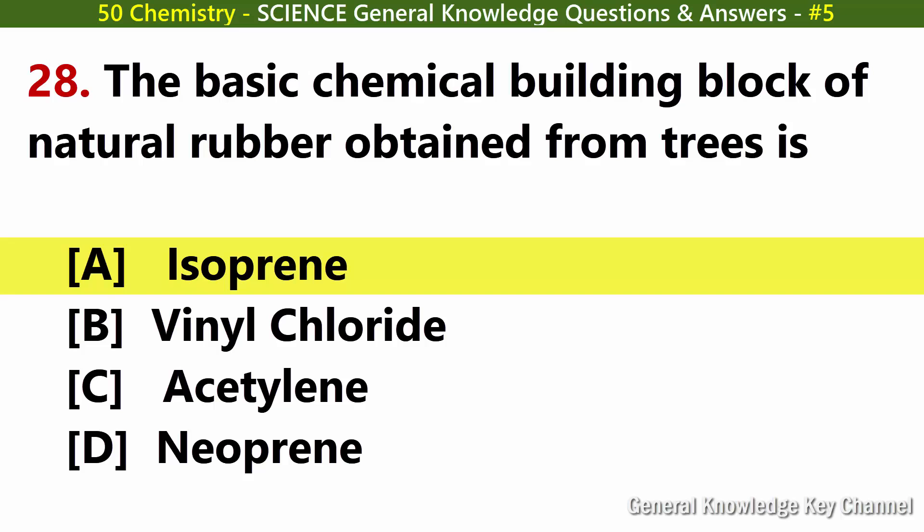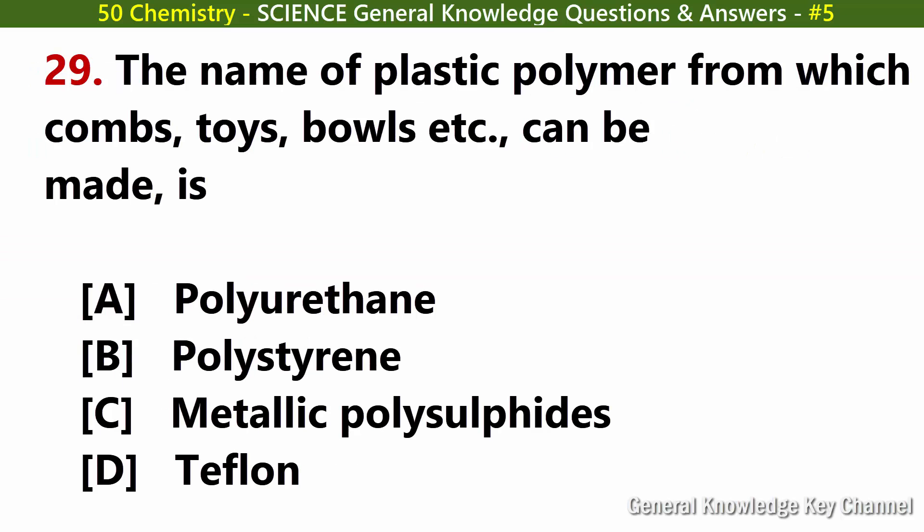Name of the plastic polymer from which combs, straws, bolts, etc. can be made is. Answer B: Polystyrene.